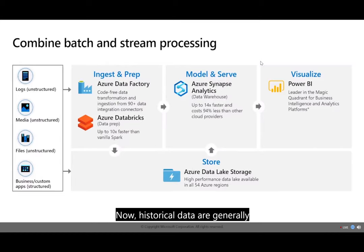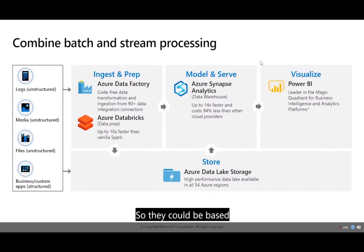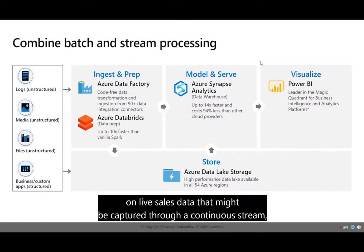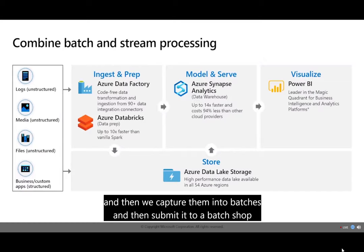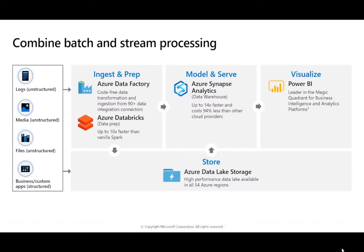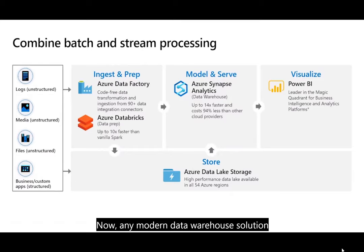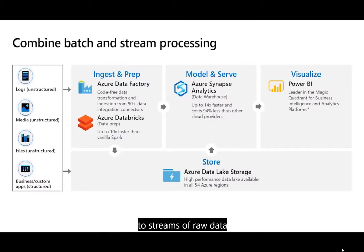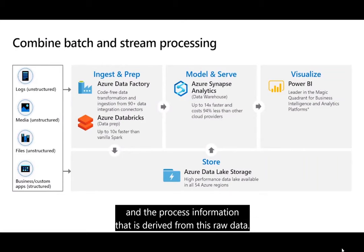Historical data is generally batch processed at regular intervals. It could be based on live sales data captured through a continuous stream, then captured into batches and submitted to be processed one batch or multiple batches at a time. Any modern data warehouse solution must also be able to provide access to streams of raw data and the processed information derived from that raw data.